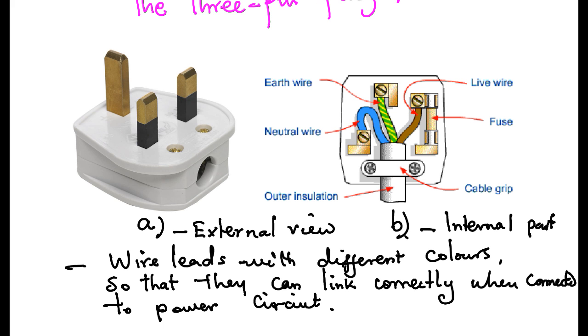In the plug that we have, we have the three wires: the live wire, earth wire, and neutral wire, which are all from a given electric appliance.